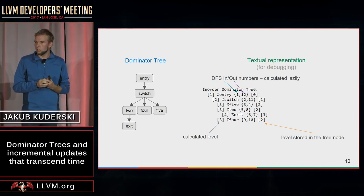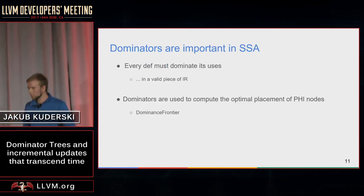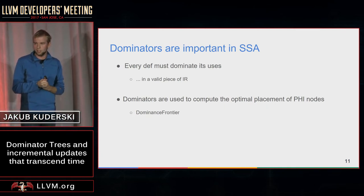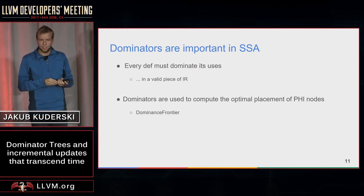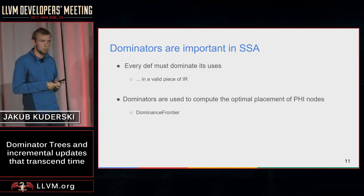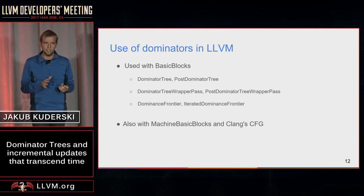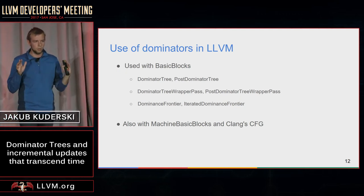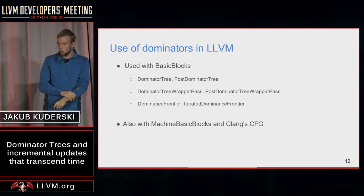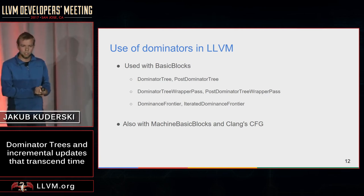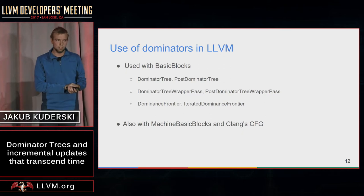The dominator tree allows you to make dominance queries and answer them in constant time. Dominators are very important in SSA because every def must dominate its uses in a valid piece of IR. Dominance frontier is used to compute optimal placement of phi nodes in SSA. The two main classes that let you access the dominator tree in LLVM are DominatorTree and PostDominatorTree, which work with basic blocks. Dominators are also used with machine basic blocks and with Clang CFG.